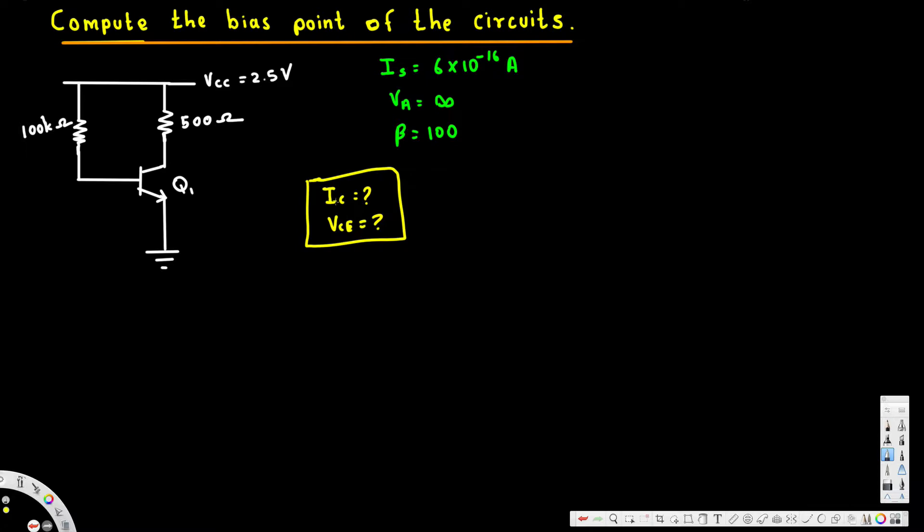We need Ic. First there's a formula that Vcc minus Ib times the resistor is equal to Vbe. Ib times 100 times 10 to the power of 3 is equal to Vbe. Now here we don't have Ib provided but there's an equivalent.